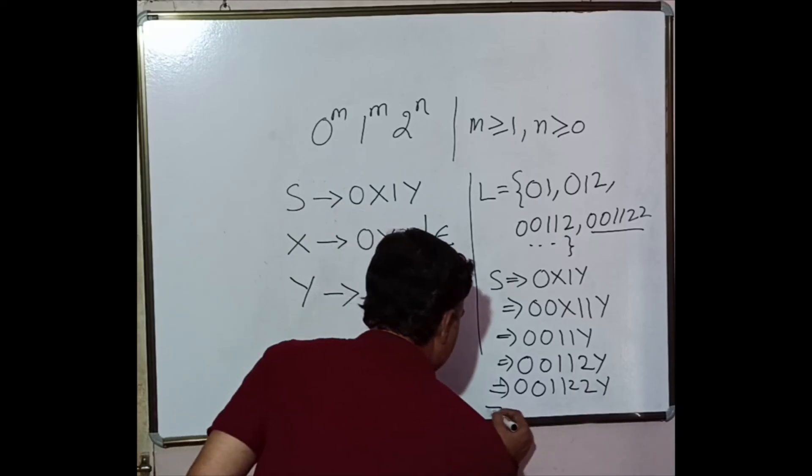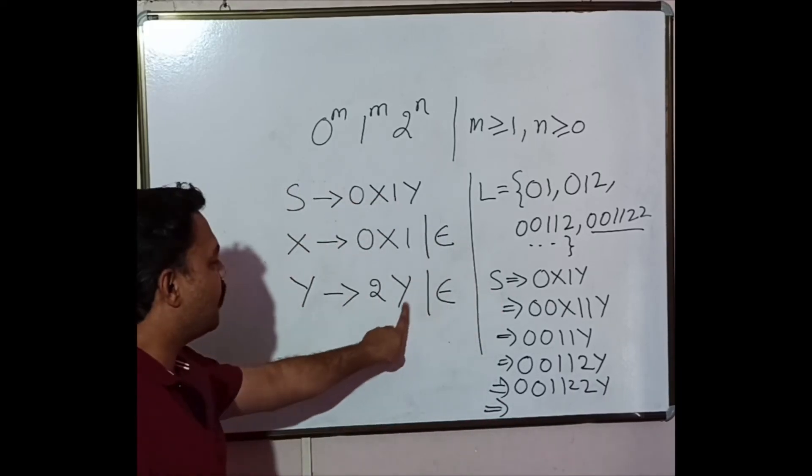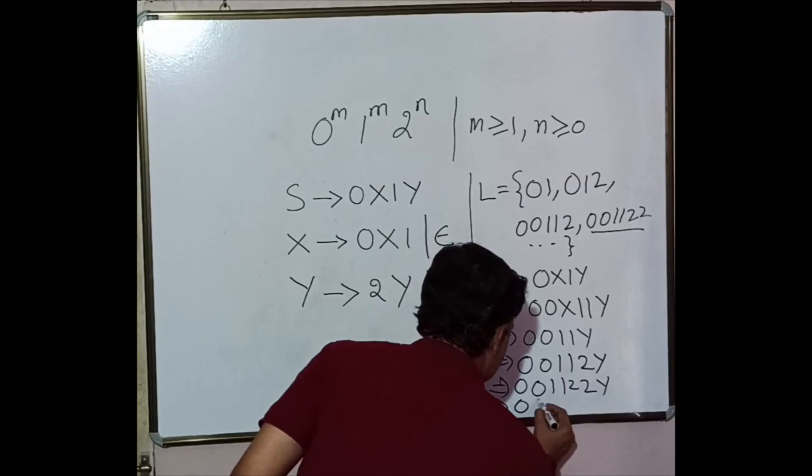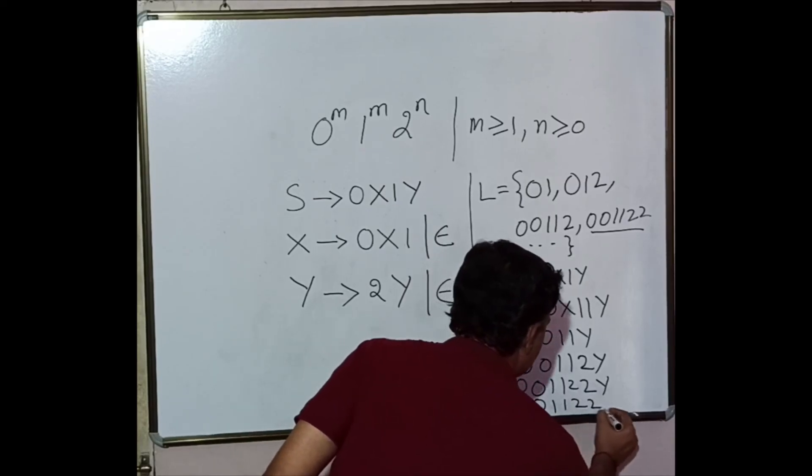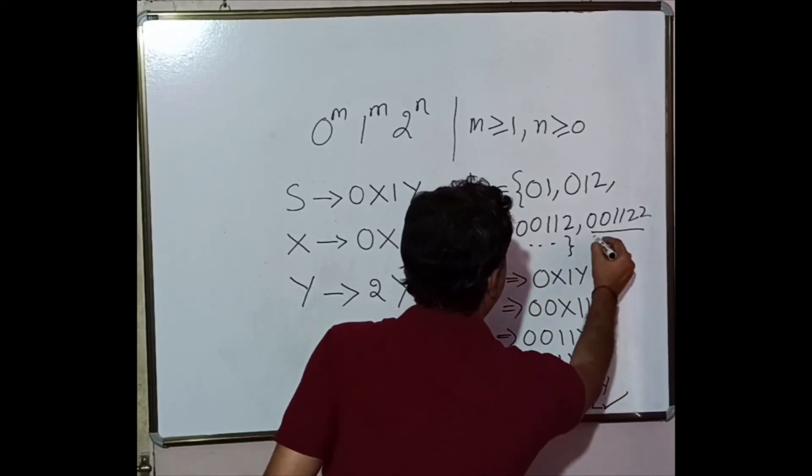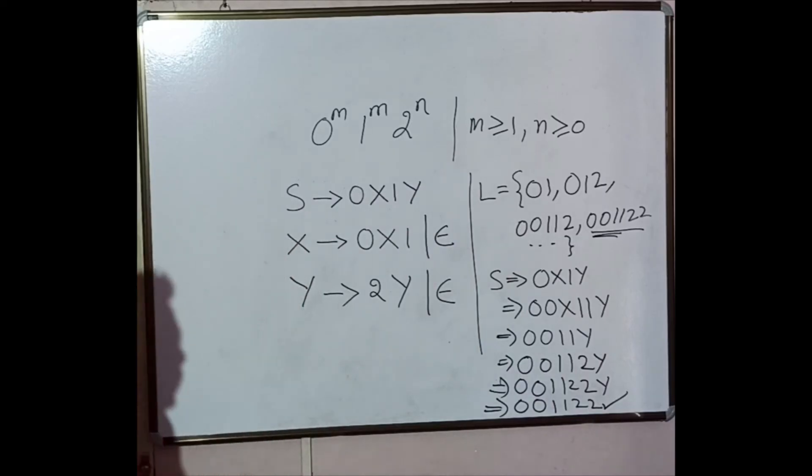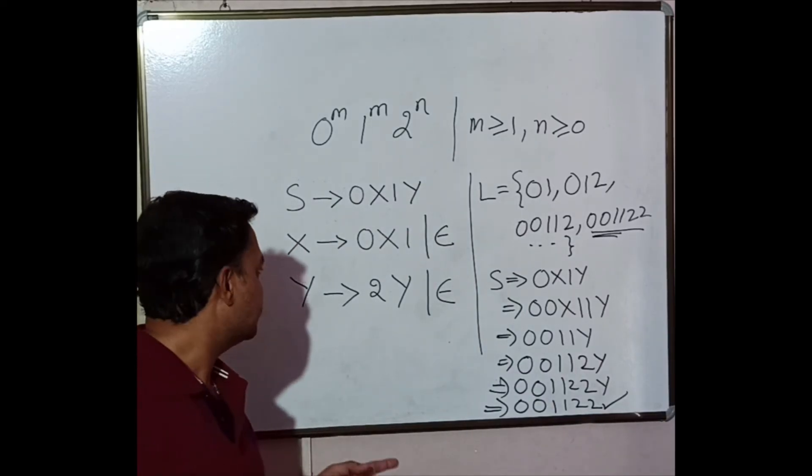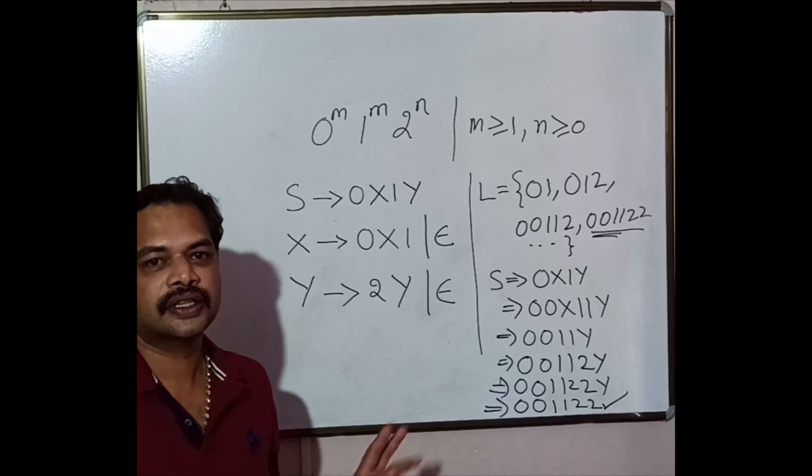Now let me stop the recursion by substituting Y with epsilon. So it is 0, 0, 1, 1, 2, 2. So I got the required string. I hope I am able to convince with the solution. Thank you.